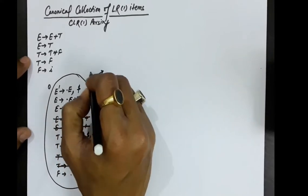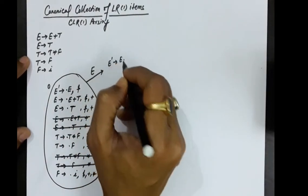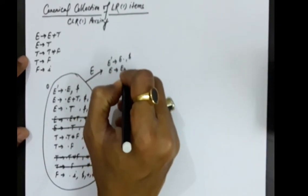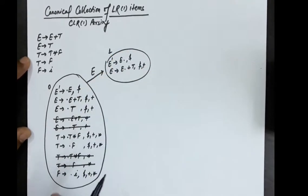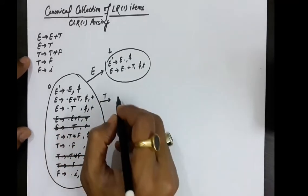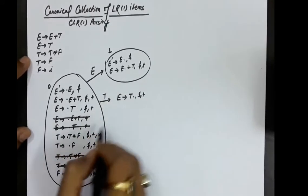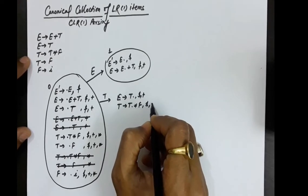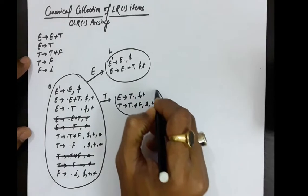Now we take different symbols and see the transitions. The first transition is with capital E: E' produces E dot with dollar as lookahead, and E produces E dot plus T with dollar and plus as lookaheads. This is state number 1. Taking T next: E produces T dot with dollar and plus as lookahead, and T produces T dot star F with dollar, plus, and multiplication sign as lookahead.